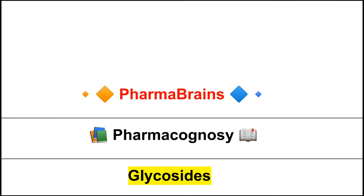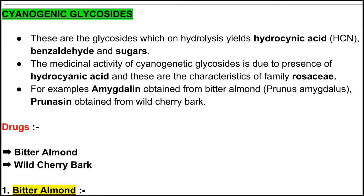We discussed anthraquinone glycosides in part three, sterol and cardiac glycosides in part four, and saponin glycosides in part five. Students, if you have not watched our videos please go and watch them, because these topics are really very important for any pharmacy competitive exam. Today's video we will discuss cyanogenic glycosides.